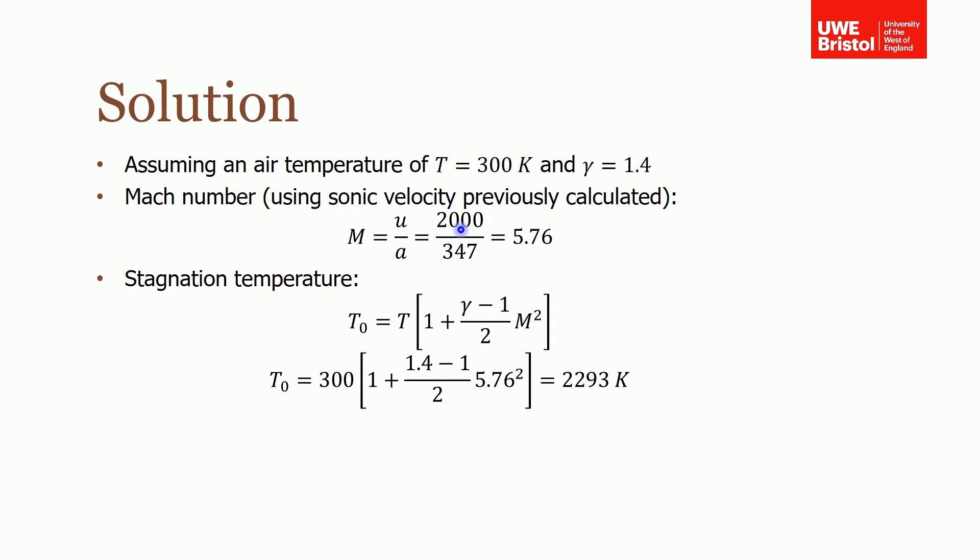So the rocket's traveling at 2 kilometers per second or 2,000 meters per second. I worked out the sonic velocity from the previous question. So the sonic velocity of air at 300 Kelvin is 347 meters per second.